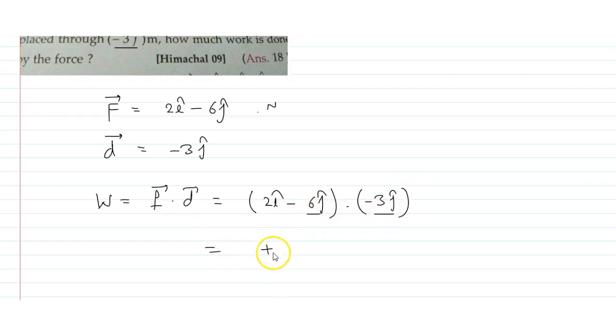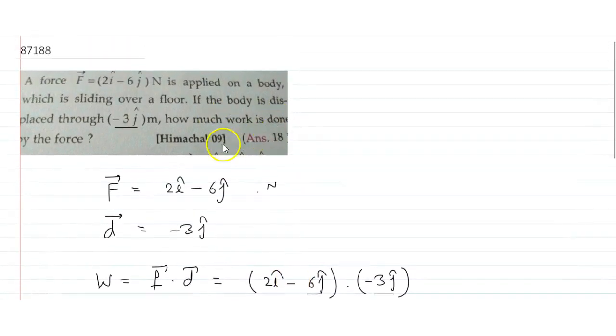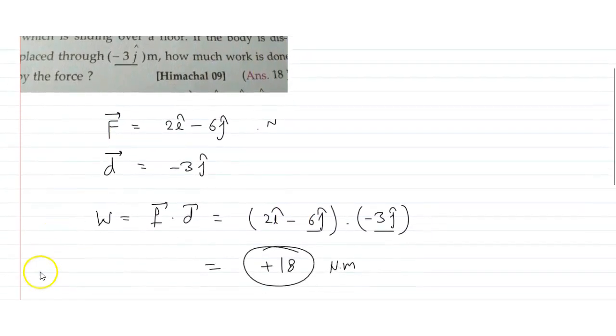The dot product gives us plus 18. So the work done is 18 newton meter. That's the work done by the force.